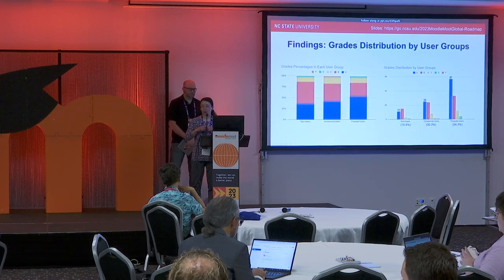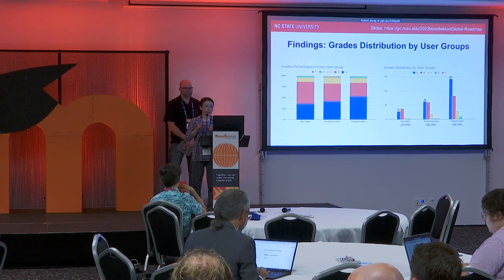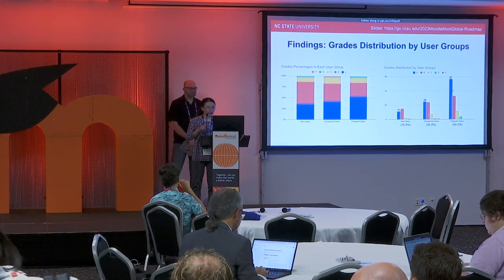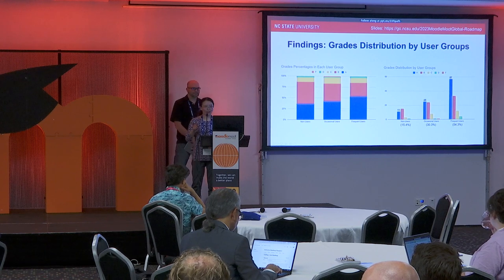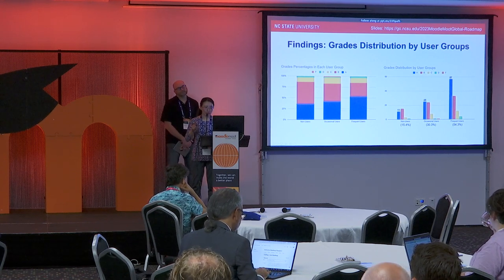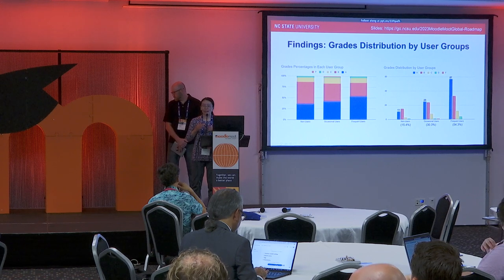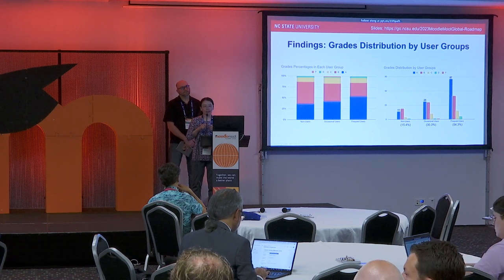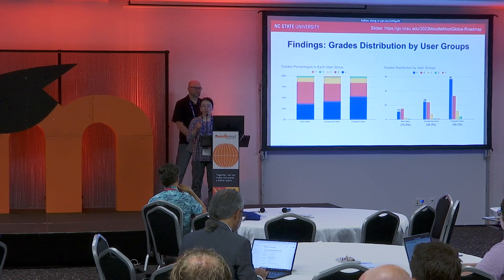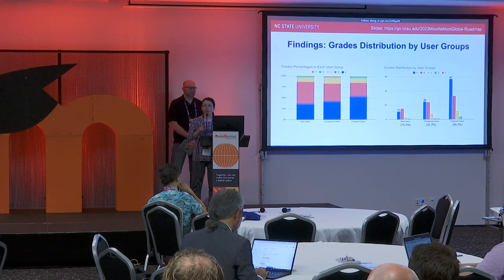Looking at the course grades distribution, a large percent of students earned A's or B's in this class. But looking closely at the three groups, frequent users had higher A rates and lower B rates than the other two groups. Among all the A students, 60% of them were frequent users. It could be because those were high achievers to begin with who were more likely to meet the expectations. But as we did the regression analysis, we found that roadmap achievements can explain about 10 to 20% of the variance in course total grades, meaning that roadmap achievements could have some predictive power of the final learning outcome.